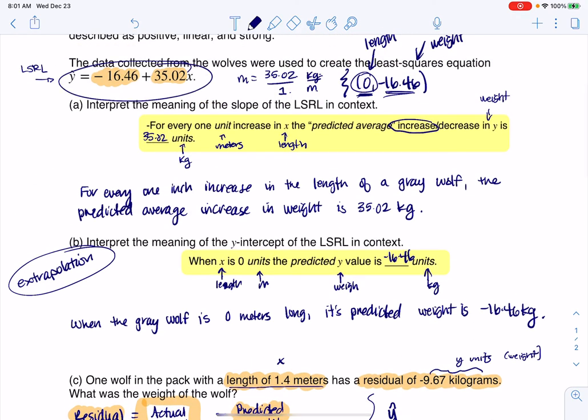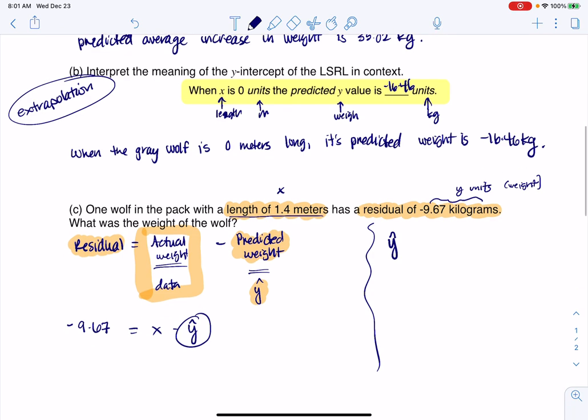It was given to us. I'm going to copy that down. My y hat is negative 16.46 plus 35.02 times x. If I ever want to find a predicted weight, that is literally what this means, all I need is an x value. Well, I have it. Let's plug in 1.4. So I get negative 16.46 plus 35.02 times 1.4.